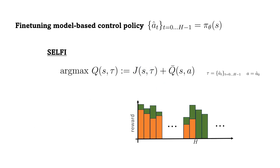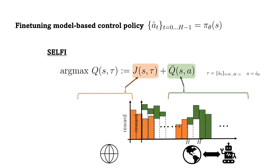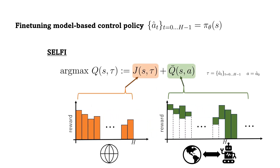SELFIE incorporates the orange objective from model-based learning with the green residual reward from model-free RL. In our formulation, the green Q-bar in model-free RL is the sum of rewards that cannot be considered with model-based learning. In this setting, SELFIE stabilizes the online fine-tuning process by incorporating the same objective used in offline learning and learns the target behavior by training Q-bar with model-free RL.